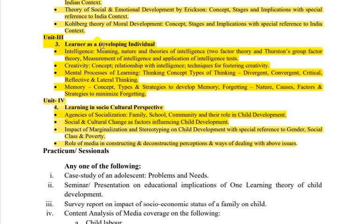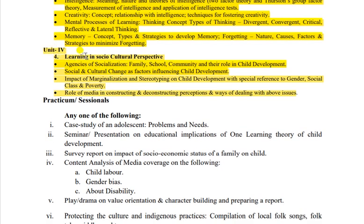Unit 3 - Learner as a Developing Individual - intelligence, creativity, memory, mental process - yeh 4 hain. Intelligence aur creativity are very important, yahan se question ek na ek pe toh aapko karna hi hai. Agar aap shortcut study karna chahte hain toh mental process of learning ko skip kar sakte hain, baaki teen zaroor karein, kyunki questions alag-alag in pe dekhne ko milte hain.